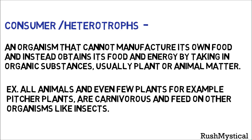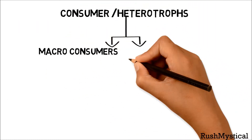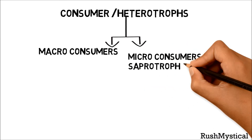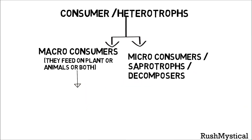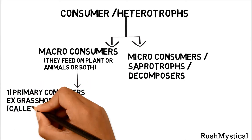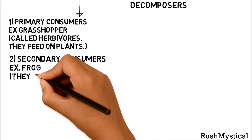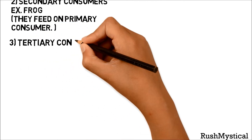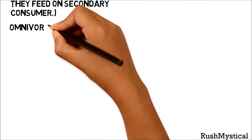Examples of consumers include all animals and even some plants — for example, pitcher plants are carnivorous and feed on insects. Consumers are divided into macro-consumers and micro-consumers. Macro-consumers include primary consumers (herbivores) that feed on plants, such as grasshoppers; secondary consumers that feed on primary consumers, such as frogs; and tertiary consumers (carnivores) that feed on secondary consumers, such as snakes.